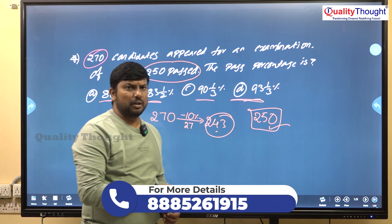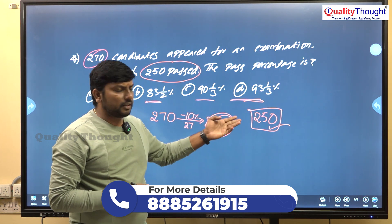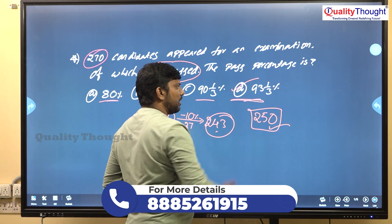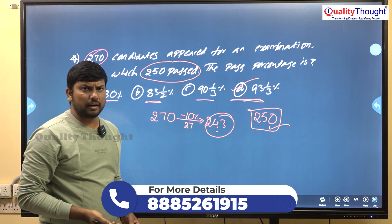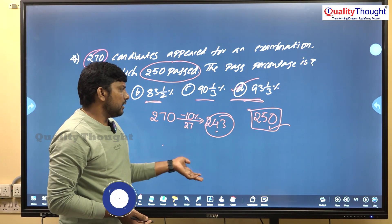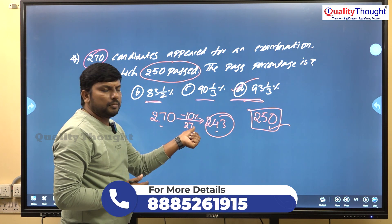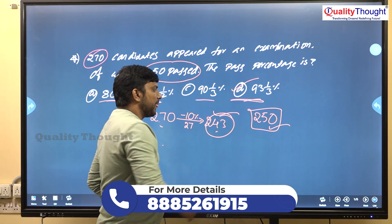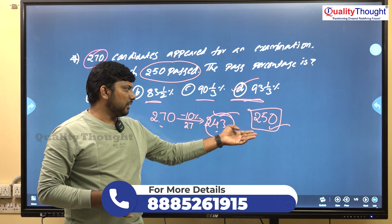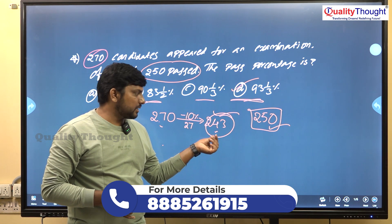250 members passed. Which page has 90%? 90% of 270 is 243. Since 250 is greater than 243, that means the pass percentage is greater than 90%. The 90% value is 243, and 250 is slightly more, so the answer is approximately 93%.